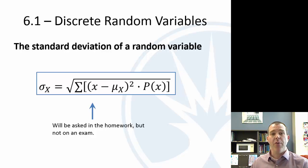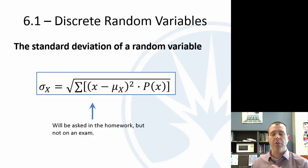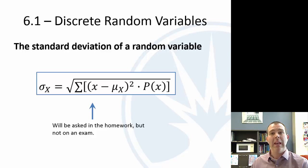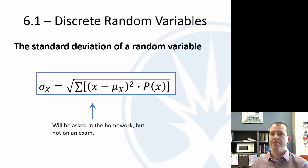That's it for Section 6.1, the introduction to discrete random variables: what is a random variable, what's a probability distribution, what's the mean, and what does that mean — or expected value — actually mean?